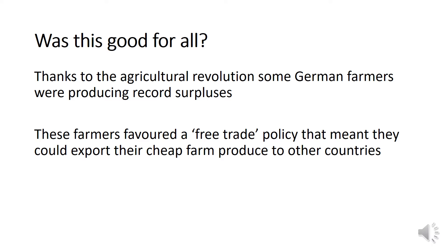Though protectionism might have helped some small German industrial businesses, it proved quite negative for many states within the German Confederation. Thanks to the Agricultural Revolution already underway in Germany, farmers were producing record surpluses using new farming techniques and tools. They had more crops than they could sell within Germany and wanted to export to other countries. But due to the protectionist policies they had implemented, those same countries levied high taxes on German goods — meaning farmers would have favoured a free trade policy to export their cheap farm produce abroad.